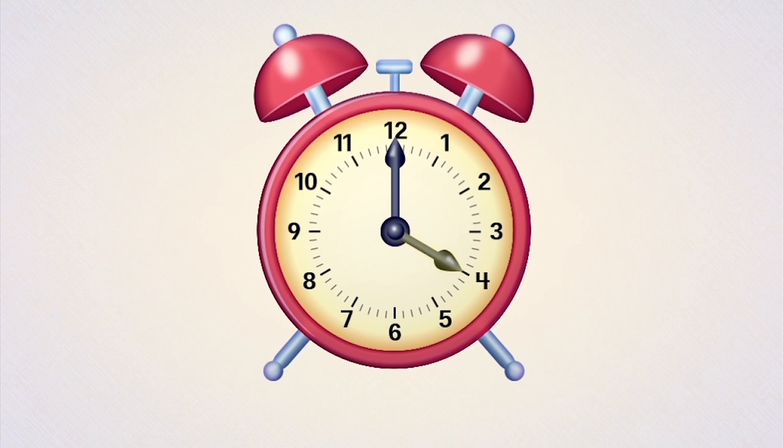On an analog clock, there is an hour hand, which is the shorter hand, and a minute hand, which is the longer hand.